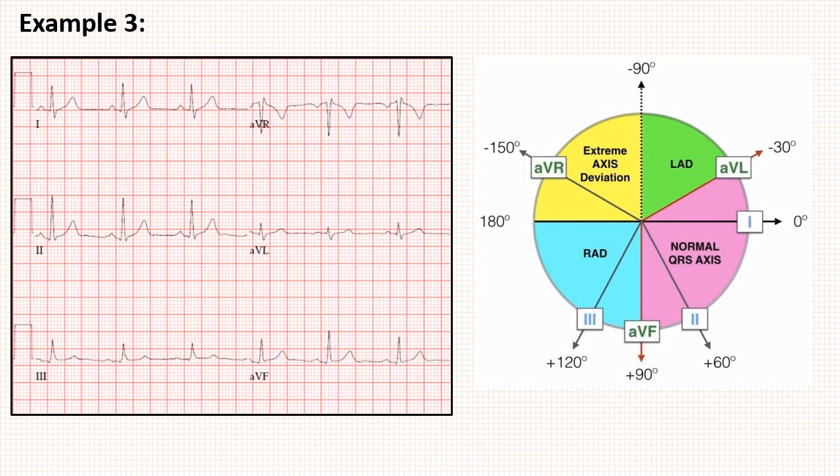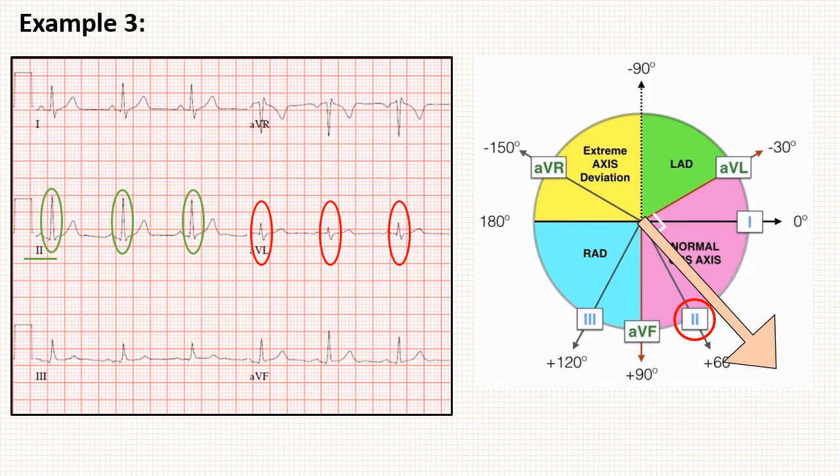Let's see one more example to make you adaptive for all variations. Look at this ECG. Apply step 1: equiphysic complexes are seen in aVR. The perpendicular lead to aVR is lead 2, which is our second step. And last is step 3: check the direction of complexes in lead 2, which are predominantly positive. So the axis is in the same direction of lead 2, which lies in the normal axis. So in this ECG, there is no axis deviation.